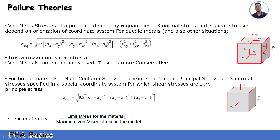Now we will talk about failure criteria. We have several failure criteria in SOLIDWORKS. Von Mises stress can be used for ductile metals like mild steel and brass. Each element has 3 stresses: 1 normal and 2 shear. For brittle materials, we use principal stresses, where elements have only 1 normal stress. The factor of safety equals the design stress divided by the material stress.